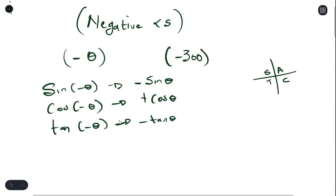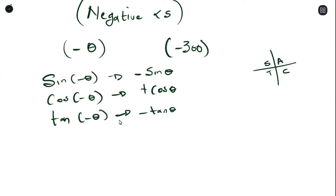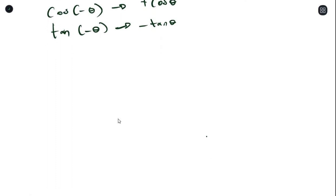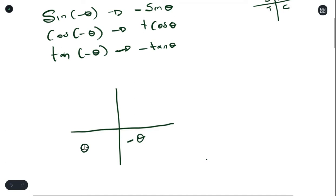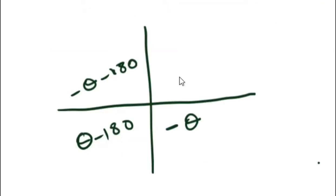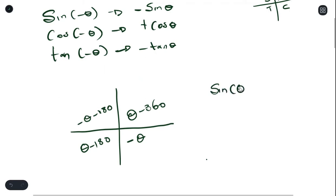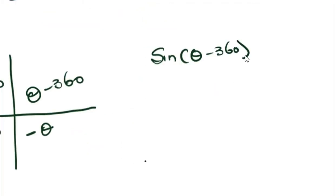Just like you have your positive quadrants, you also have your negative quadrant formulas. We have negative theta, theta minus 180, negative theta minus 180, and theta minus 360. What this means is that if I have a question that says theta minus 360, because it's in the first quadrant, I understand my answer for this is just sine theta.